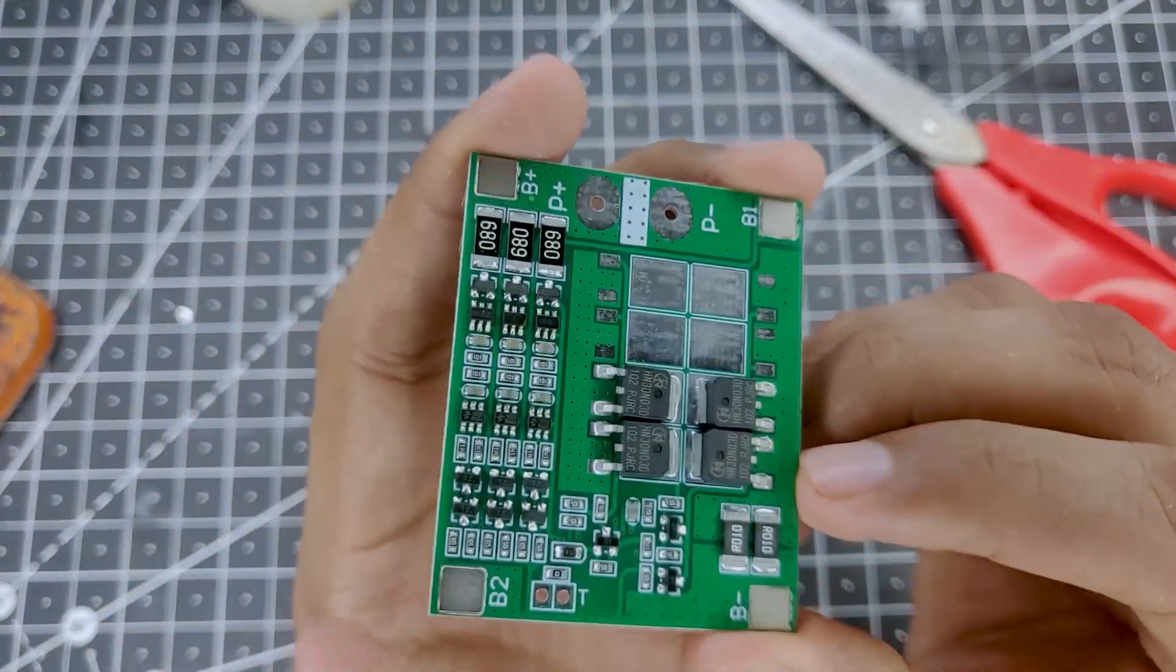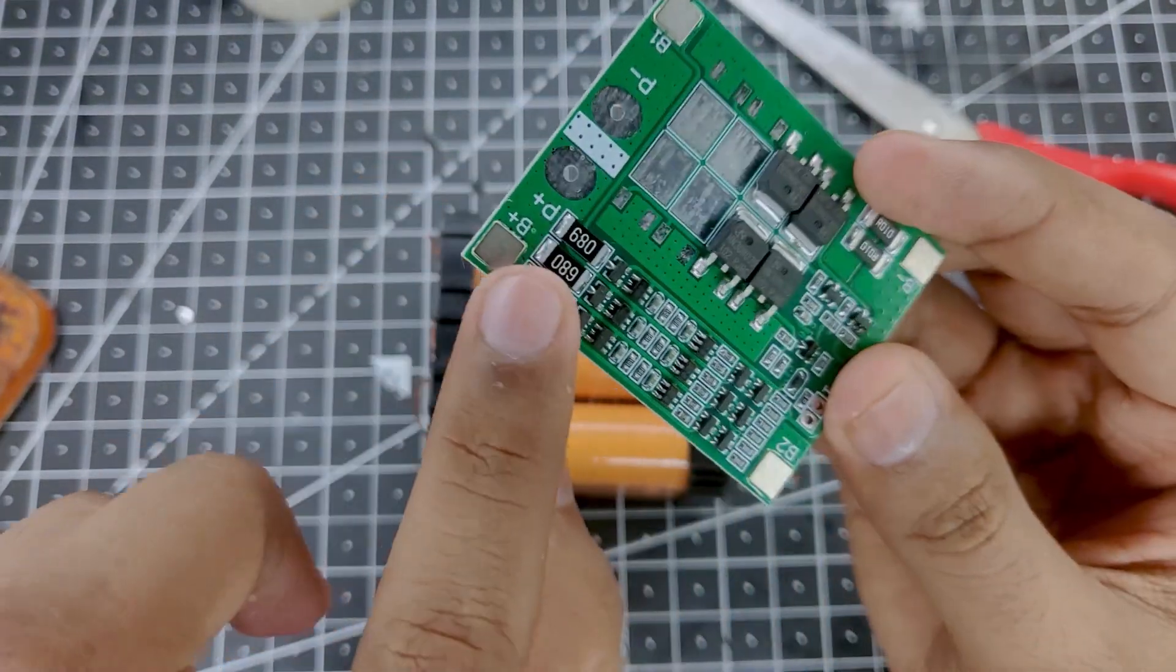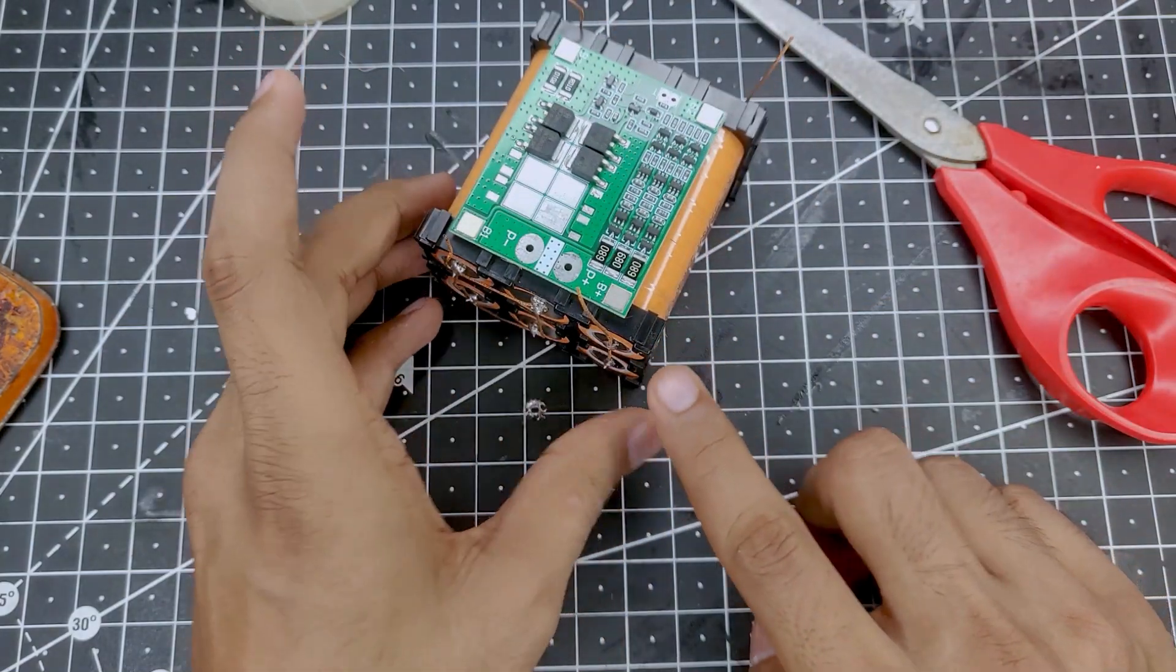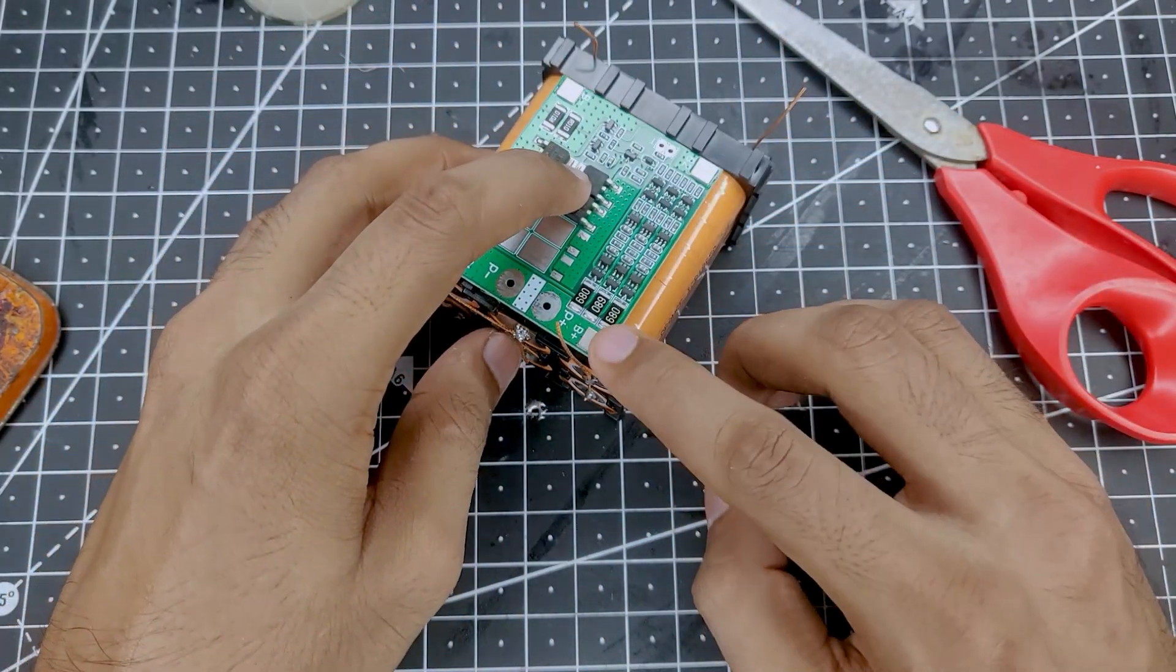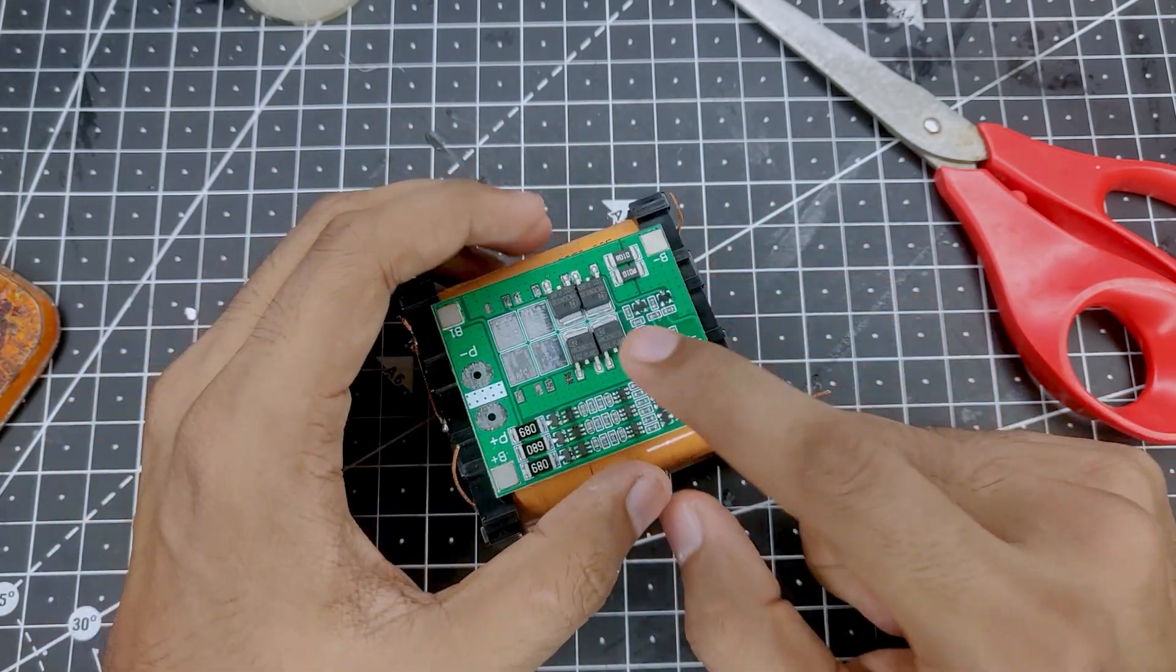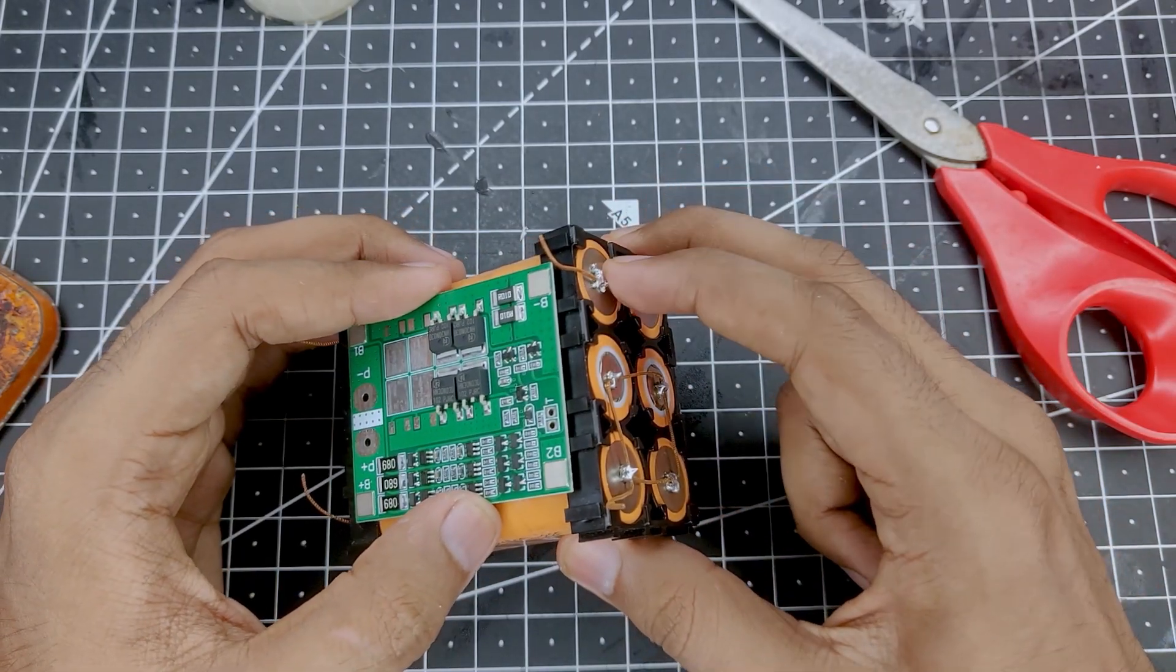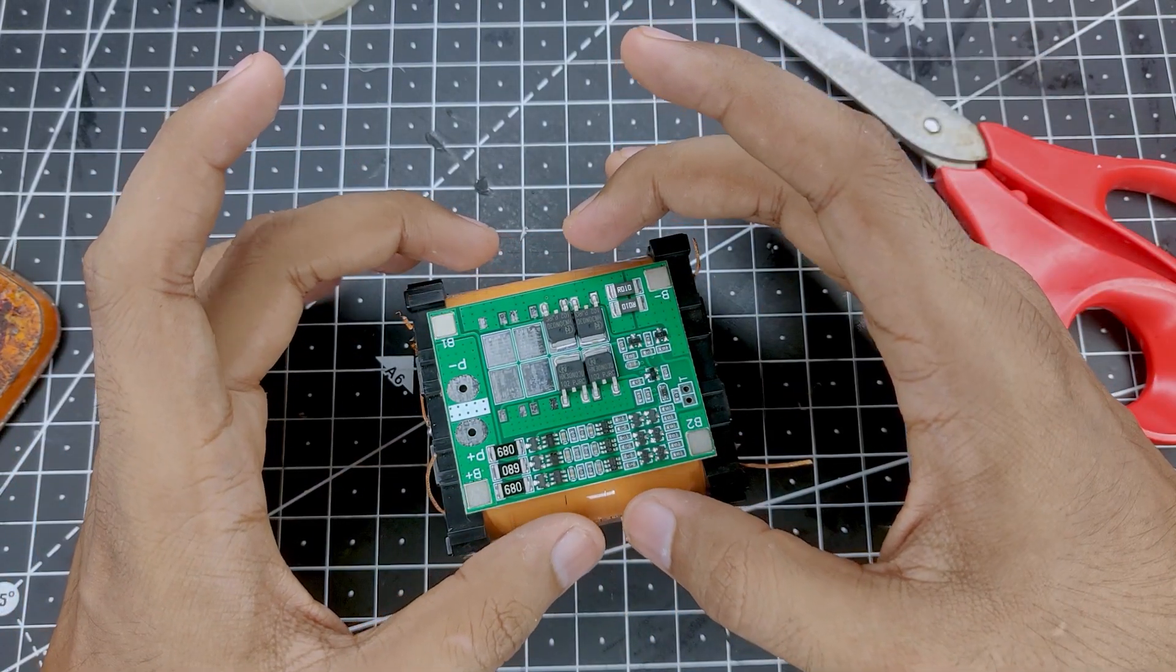As you can see on the BMS we have battery negative, battery positive, B2 and B1 ports. The battery positive will go to the battery positive port, and the rest will align itself. The positive terminal goes directly to B plus, then we have B2 terminal, then B1 terminal, and at last we have B minus which is the negative portion. Let me secure the board to the battery and then solder it on.